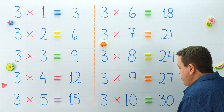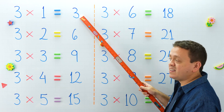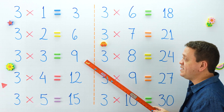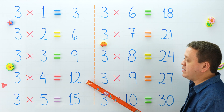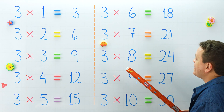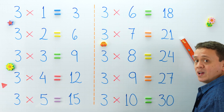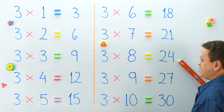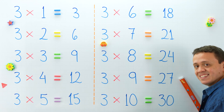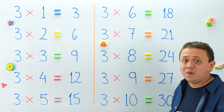Why don't we take another look at the products of this table? But this time, you're going to help me. What is 3 times 1? And 3 times 2 equals? 3 times 3 equals? 3 times 4 is equal to? 3 times 5 equals? And 3 times 6 equals? 3 times 7 equals? 3 times 8 equals? 3 times 9 equals? Last one: 3 times 10 is equal to 30. That is right. We're done with this table.